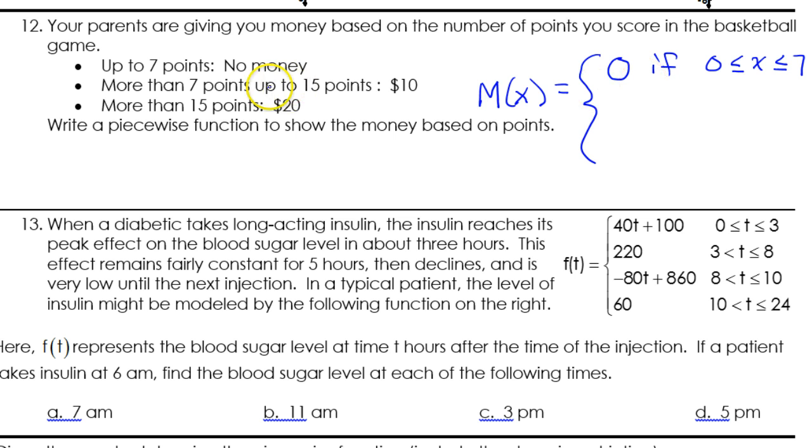Now, more than 7 points, up to 15 points, I'm going to get $10, so I'm just going to put $10 if, so it's more than 7. So I'm going to say 7 is less than, I just won't put the equal to under it. So it's between 7 and 15, here's between 7 and 15, not including the 7, because that's $0, but including the 15, because it says up to 15.